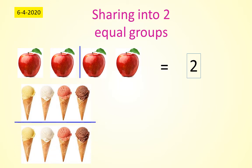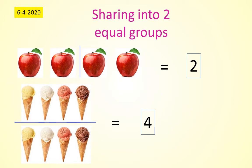Here 8 ice creams were there and I divide into two equal groups. How many ice creams in one group? It is 4. Very good. Here in one group: 1, 2, 3, 4. Four ice creams in one group.